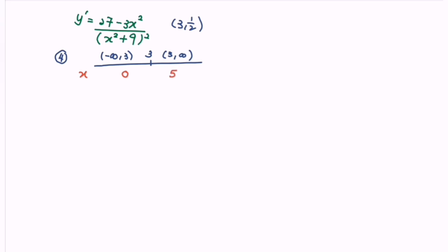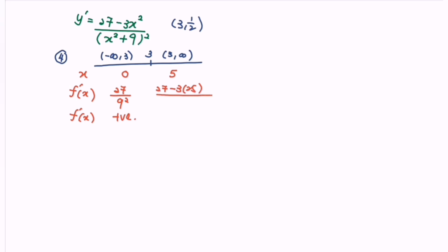Substituting x = 0 into y′ gives 27 over 9², which is a positive value. Substituting x = 5 gives (27 − 3·25) over (25 + 9)². The numerator is 27 − 75, which is clearly negative, and the denominator (25 + 9)² is positive. So the result is a negative value.